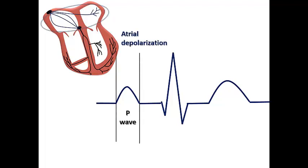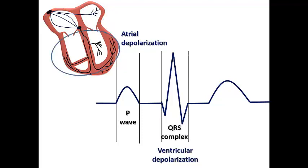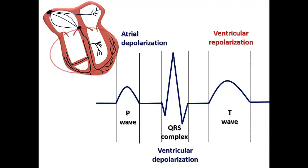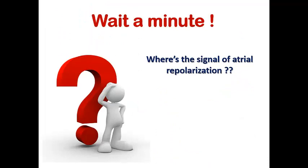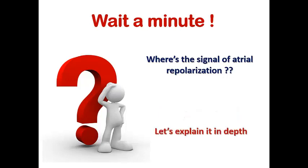Let's remind ourselves with the basics. We know that the P wave represents atrial depolarization, the QRS complex represents ventricular depolarization, and the T wave represents ventricular repolarization. These three waves represent the electrical activity inside the heart. A common question when learning ECG is: where is the signal of atrial repolarization? If the atrium is depolarized, it should be followed by a phase of repolarization. The answer is that it is masked inside the QRS complex, because atrial repolarization occurs simultaneously with ventricular depolarization and is obscured by the QRS complex.